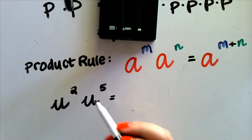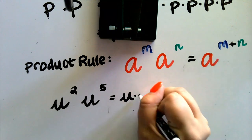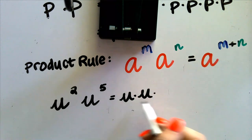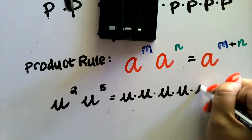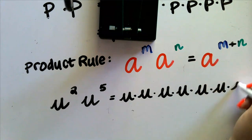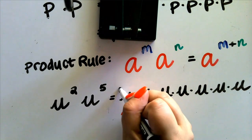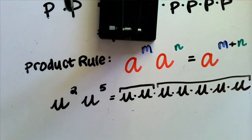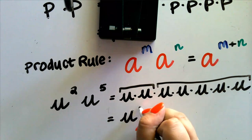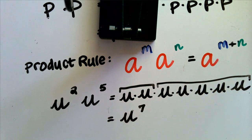But just in case we forget, let's write it out. u times u, that's u to the second, times u times u times u, three, four, five. We have u to the second times u to the fifth. We know that our result is u to the seventh power.